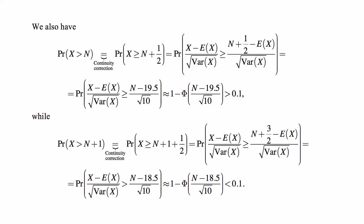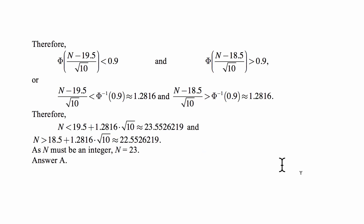Rearranging both inequalities: Φ((n − 19.5) / √10) is less than 0.9, and Φ((n − 18.5) / √10) is greater than 0.9. Since Φ is an increasing function — the CDF of the standard normal distribution — we can apply its inverse, which amounts to finding the z-value corresponding to 0.9.